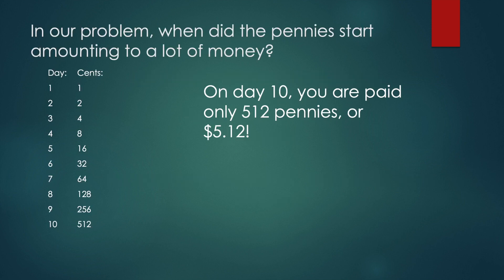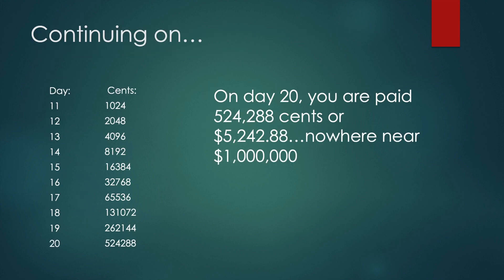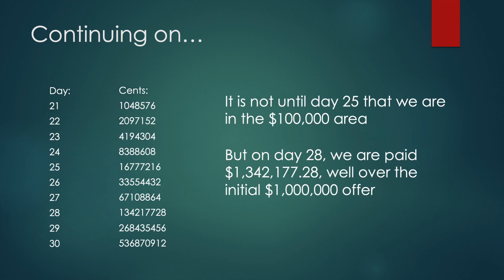When did the penny start amounting to a lot of money? On day 10, you're paid only $5.12. On day 20, you're paid just over $5,000, which is nowhere near $1 million — you might be regretting accepting this option at this point. It is not until day 25 that we are even in the $100,000 area. But on day 28, we are paid $1,342,177.28, which is well over the initial $1 million offer.